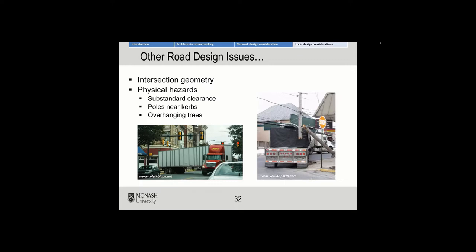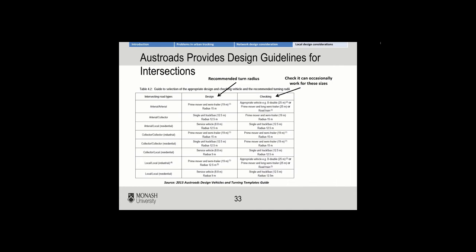So if a truck does take the curve too quickly, it can unfortunately tip over. Other road design issues include intersection geometry and physical hazards — there have been many cases in Melbourne recently of trucks that are too high trying to go under bridges they're not designed for, or hitting poles or overhanging trees. When a truck goes around a corner, whilst the prime mover goes out wide, the actual trailer cuts the corner a lot closer, as shown in the illustration.